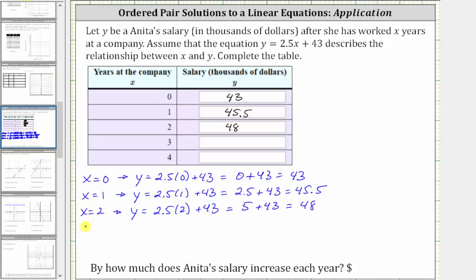Next, we have x equals three. When x equals three, y equals 2.5 times three plus 43. 2.5 times three is 7.5. We have 7.5 plus 43 equals 50.5. When x is three, y is 50.5.